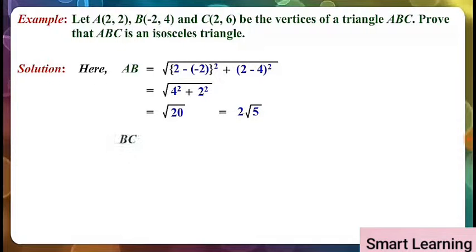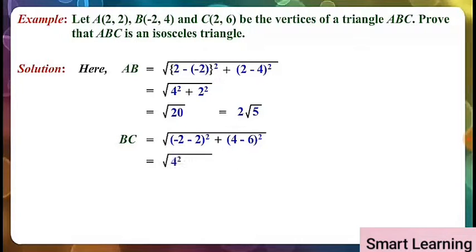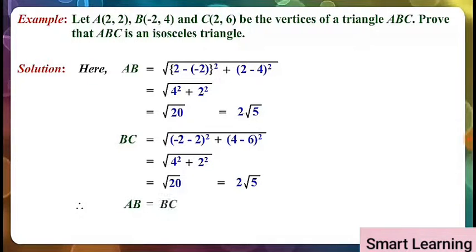And BC is equal to under root 20, equal to 2 root 5. Therefore AB is equal to BC, hence ABC is an isosceles triangle.